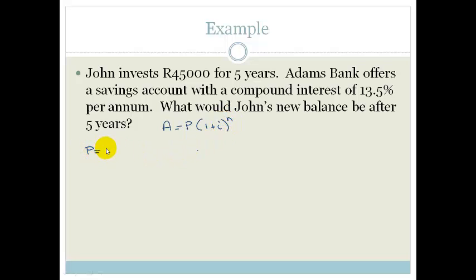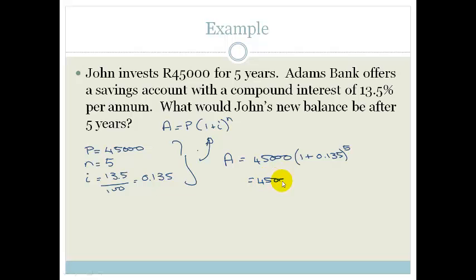Where your P is your principal, which is 45,000. Your N is 5 years. And your i is 13.5 divided by 100 to get into decimal, which is 0.135. So if we substitute this into the formula, we get A = 45,000 times (1 + 0.135)^5, which is 45,000 times 1.135^5.